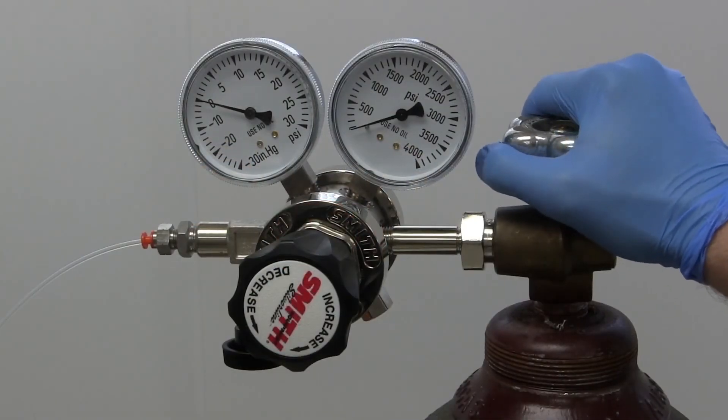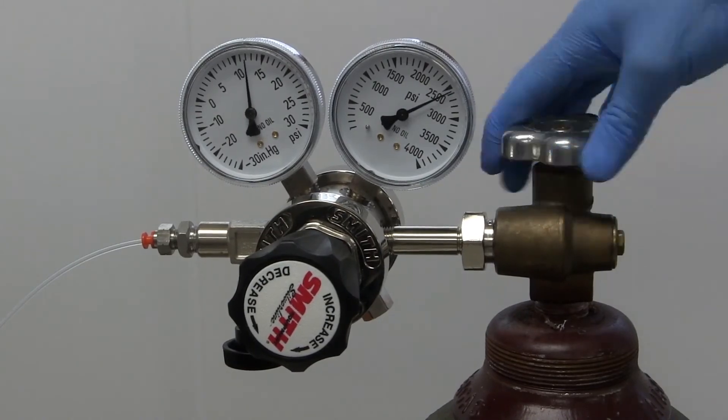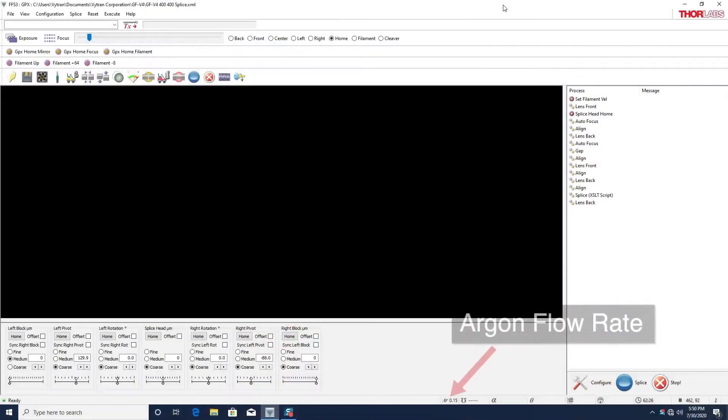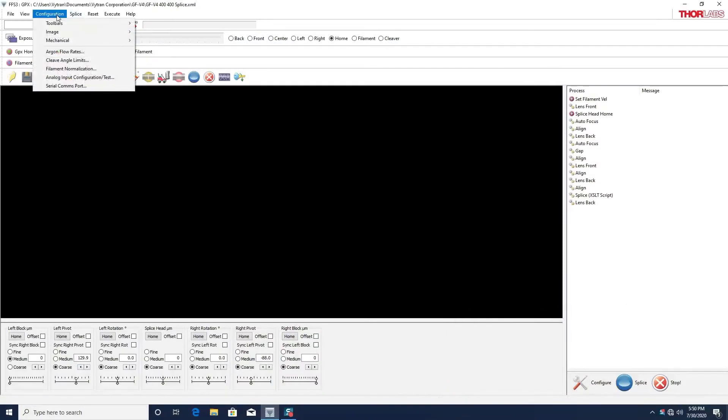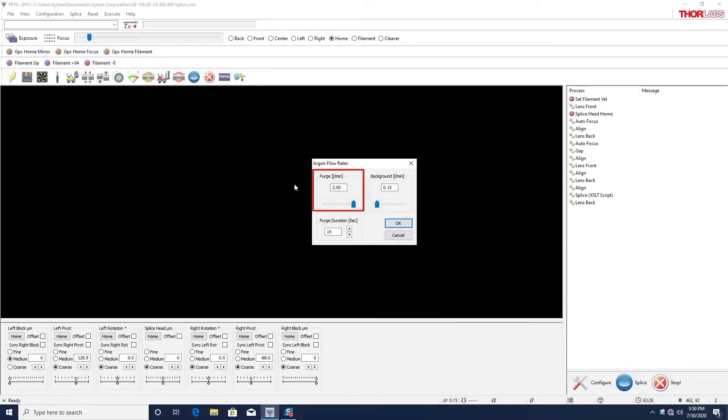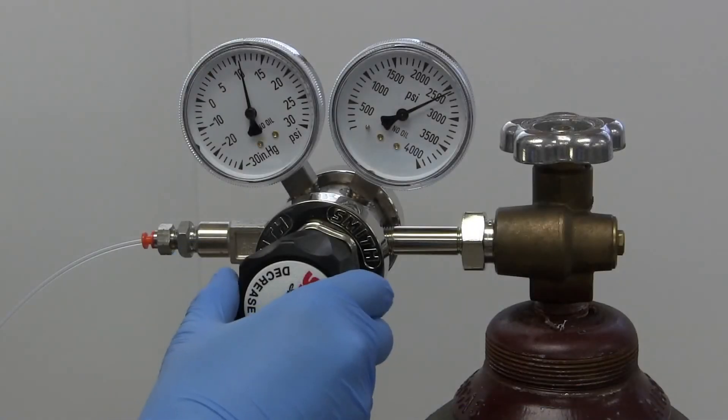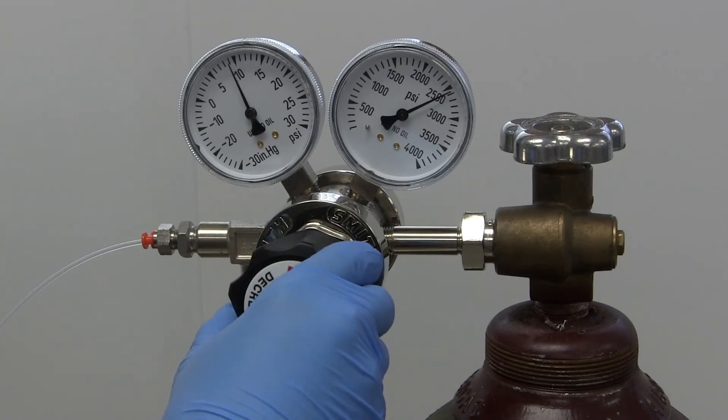Open the valve on the argon cylinder and power up the unit so that the background level of argon flows to the filament body. Open the argon flow rates tool from the configuration menu and set the flow rate to 2 liters per minute for 60 seconds. Execute the purge process and adjust the regulator so that the pressure is 9 to 12 psi during the purge.